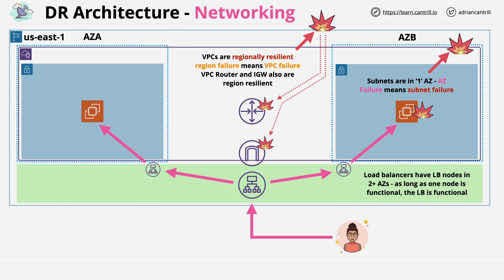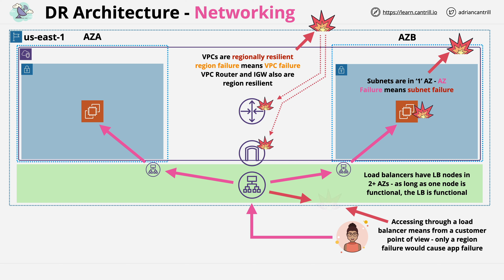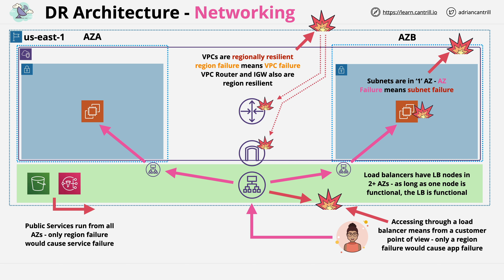From the perspective of a customer, only a region failure can impact the service provided by a well-designed application running in multiple availability zones. If the Catagram application uses any public services such as S3 or SNS, they're also resilient across the region they're in, so it would require the entire region to fail for their service to be impacted. For most server compute-based applications, it's the subnets and availability zones which are the risk, and this can be mitigated by using load balancing across multiple availability zones within a region.